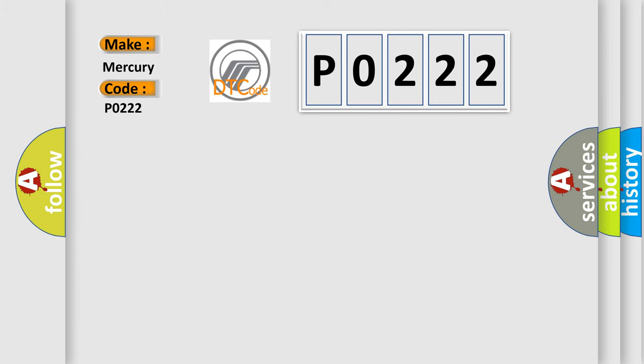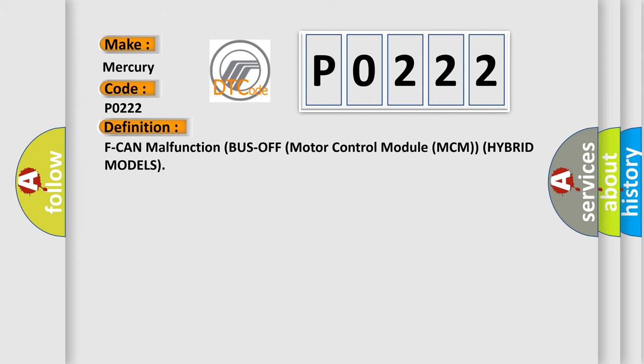The basic definition is F-CAN malfunction bus-off motor control module MCM hybrid models. And now this is a short description of this DTC code.